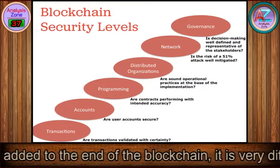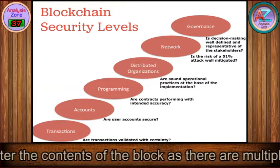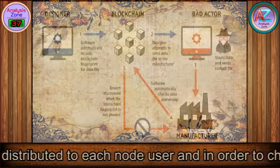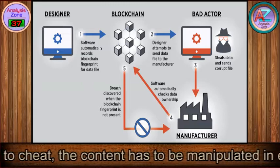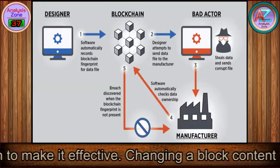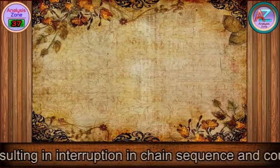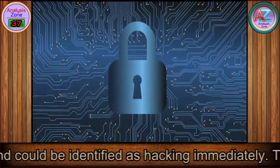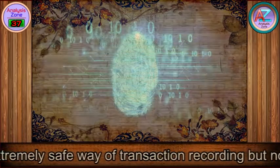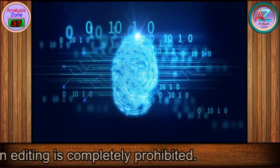After a block has been added to the end of the blockchain, it is very difficult to go back and alter its contents, as there are multiple identical copies of that blockchain distributed to each node user. In order to cheat, the content has to be manipulated in each block on the chain. Changing a block's content will change that block's hash code, resulting in an interruption in the chain sequence that could be identified as hacking immediately. This enables a very transparent yet extremely safe way of recording transactions — in blockchain, editing is completely prohibited.